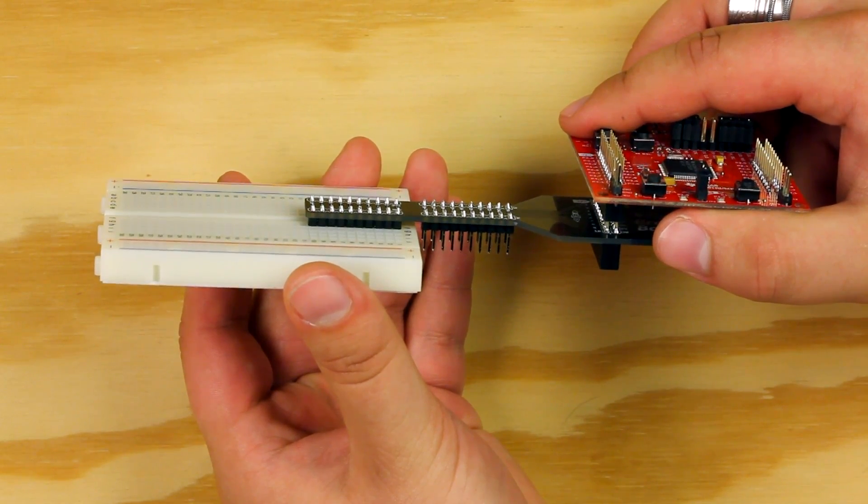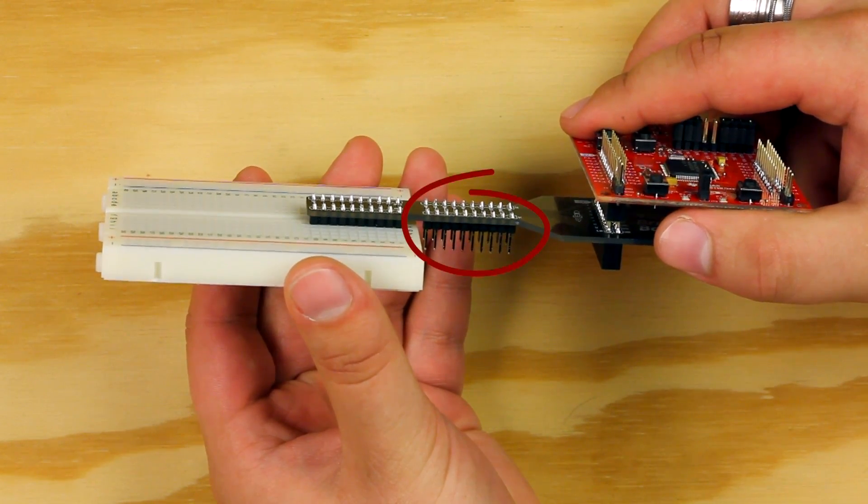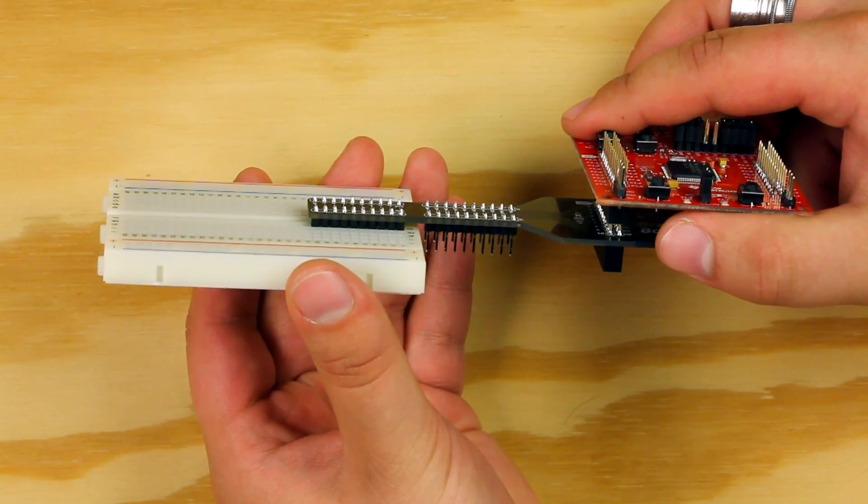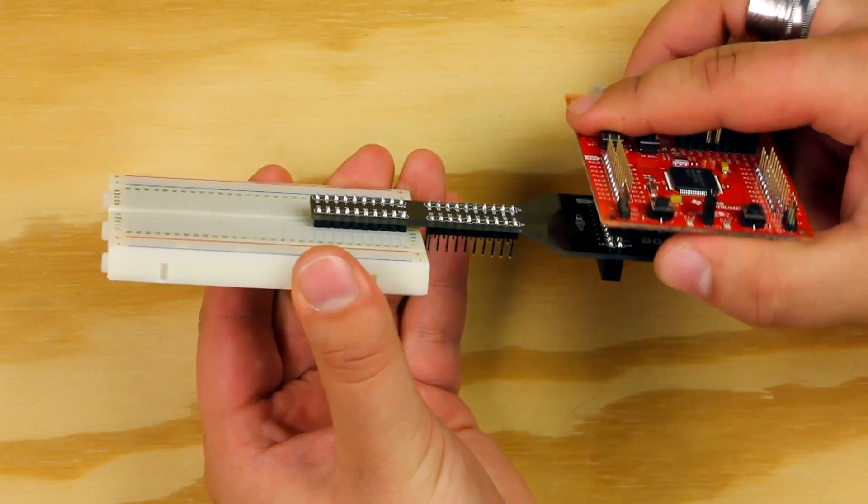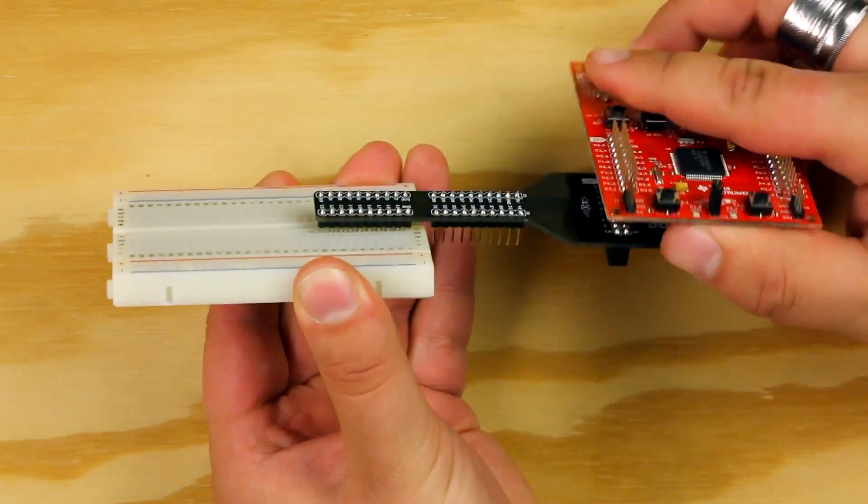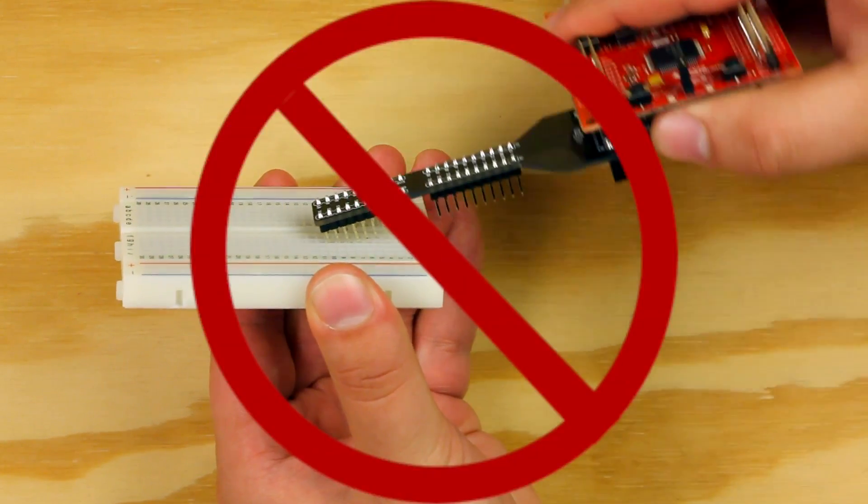If you need additional inputs and outputs from the Launchpad, you can use the 40 pins. If you need to remove your booster pack from the breadboard, use a rocking motion to easily free it. Do not pull directly on the booster pack or you may damage it.